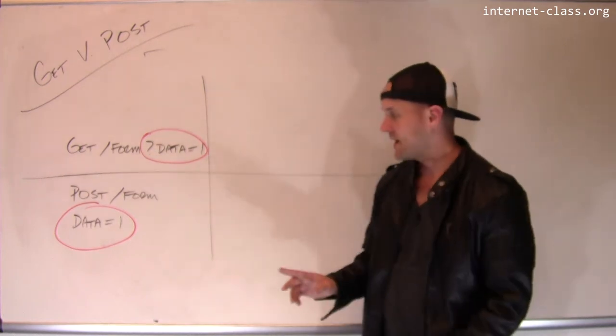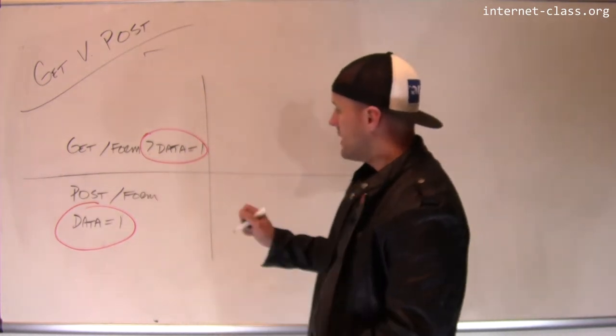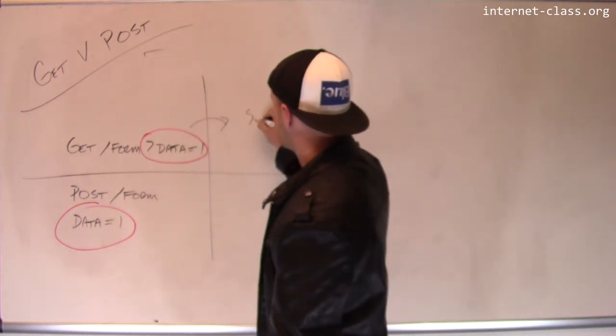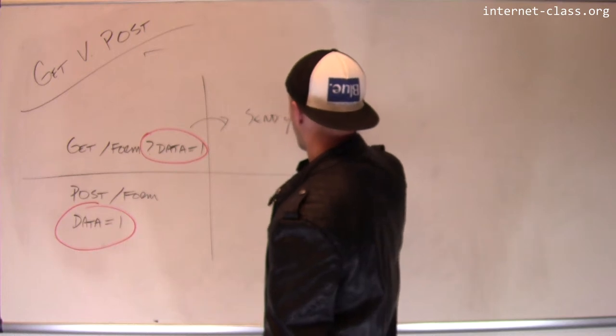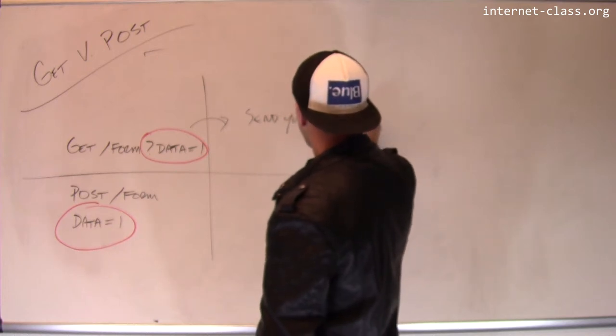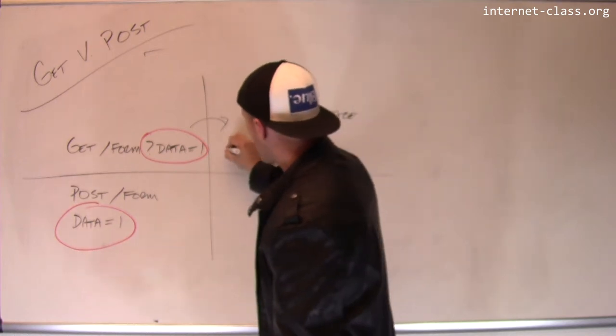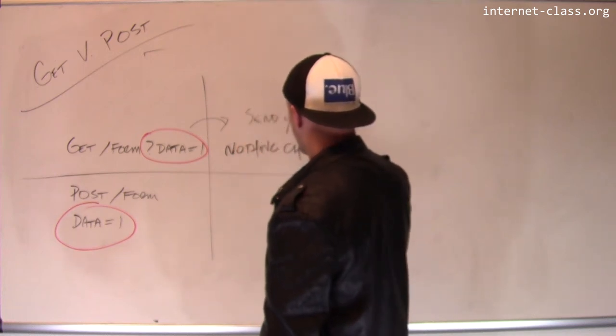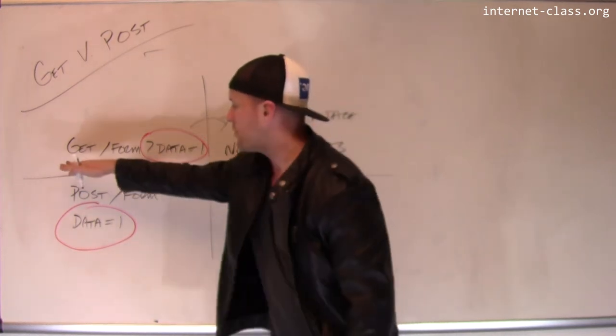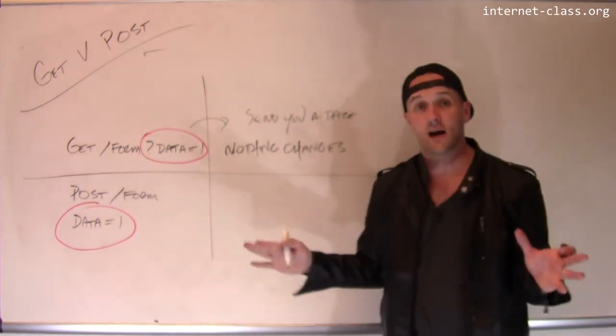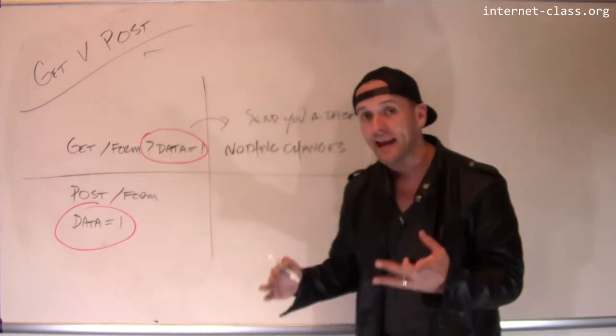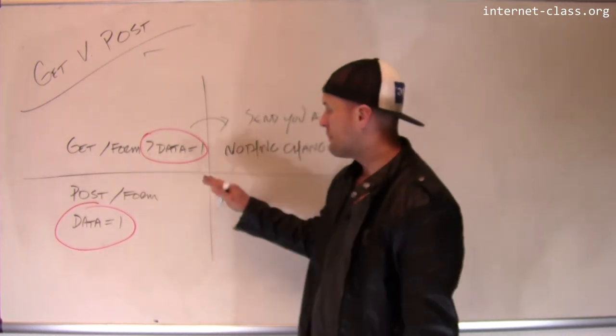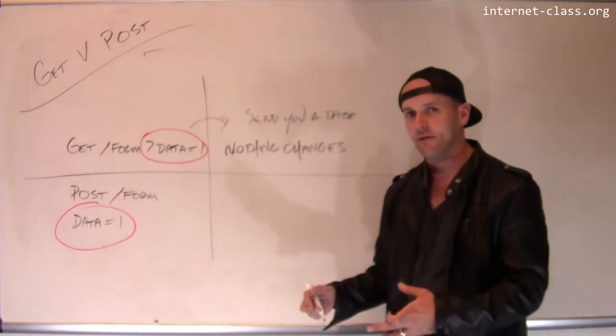Something might happen twice. And so the idea here is that in response to a GET request, the server is going to send you a page. This is a GET request. And the idea is that on some level, nothing changes on the server as a result of this request. So if you hit this GET request ten times in a row, you probably are going to get the same page back. Now there might be elements of the page that are dynamically rendered that change a little bit. But this value isn't affecting anything on the server.